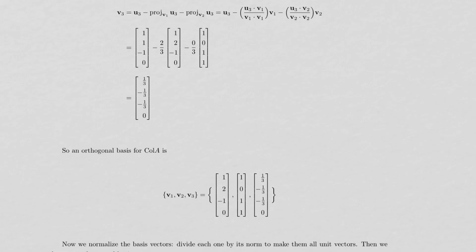And then for v3, I take u3 and I have to subtract two projections. I project u3 onto v1 and then I project it also onto v2. So here are the formulas for that. Again, the dot products do the arithmetic and there's v3.